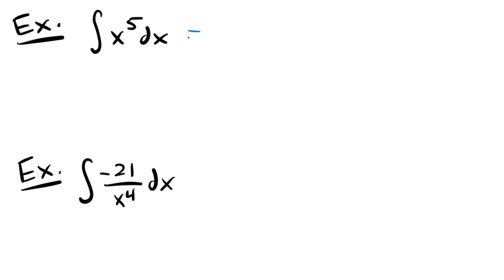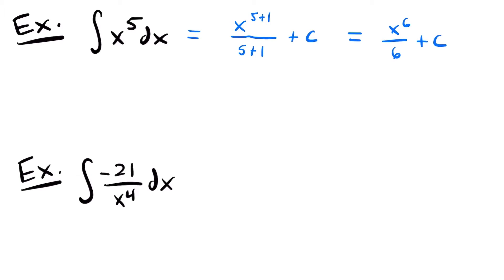This is going to be equal to x to the power of 5 plus 1. You're going to add 1 to your exponent, so you're going to have 5 plus 1, and then you're going to divide by that power, 5 plus 1. And then of course, you don't want to forget your plus c term. If we simplify, this is equal to x to the sixth power divided by 6 plus c — the antiderivative or the answer to this integral.